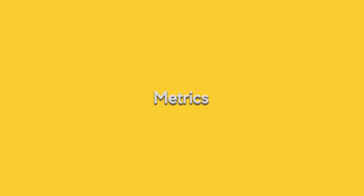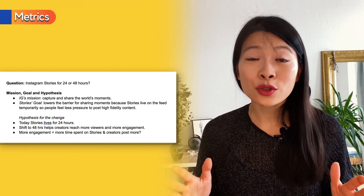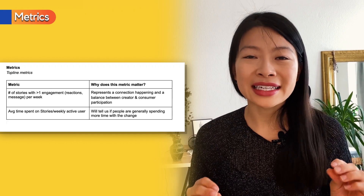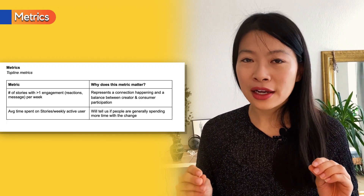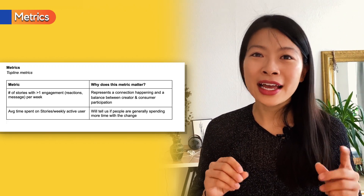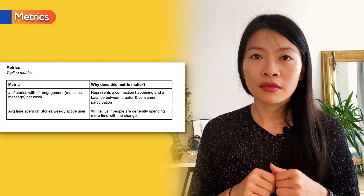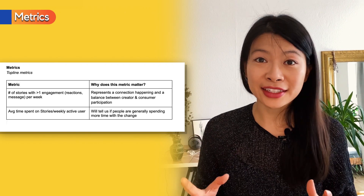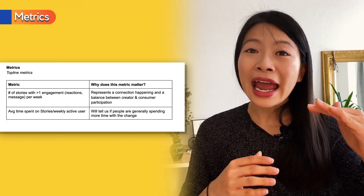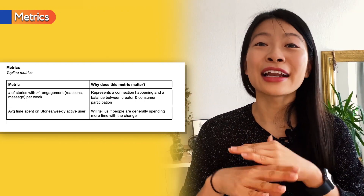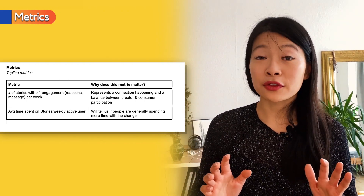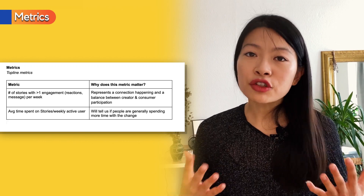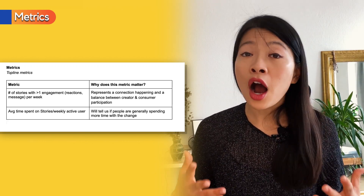Next, we're going into metrics. What are some top-line metrics important for Stories? My number one metric is the number of stories that have at least one engagement per week — where an engagement counts as a reaction or a DM. This metric is important because it represents the connection between content creators and consumers. Another top-line metric is the average time spent on Stories per weekly active user.